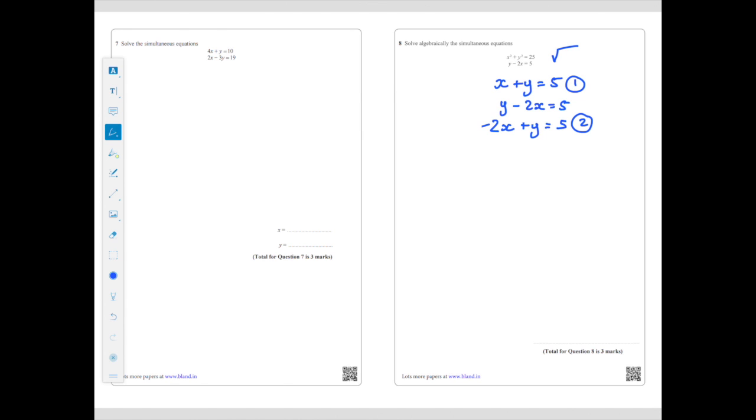So how can I remove the Y values? Well, I can do that by taking equation 1 away from equation 2. So minus 2X minus X is minus 3X. The Y's have disappeared. 5 take 5 is 0. Divide by 3 to get X by itself, and X equals 0.